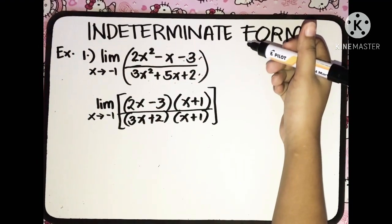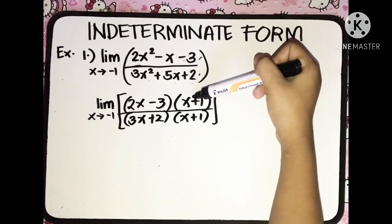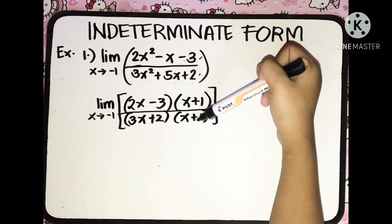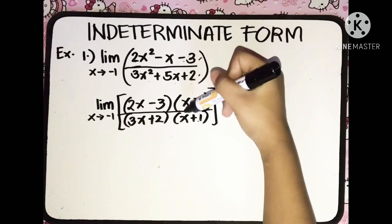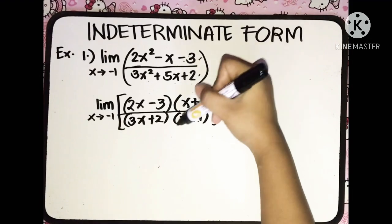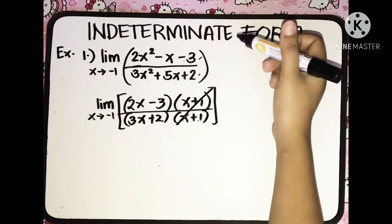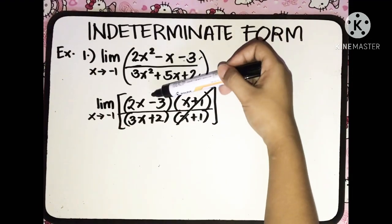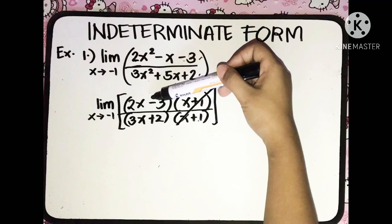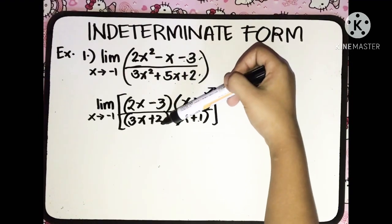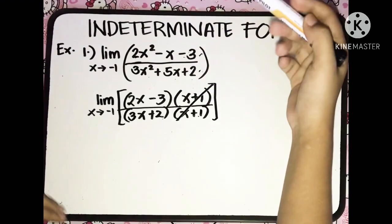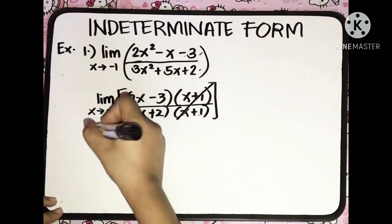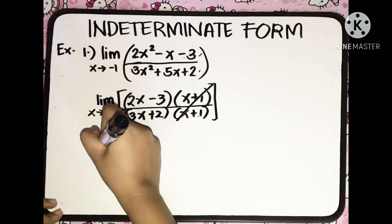Now we can see we have (x plus 1) over (x plus 1), which is equivalent to 1, so we can cancel that out. The function we'll take the limit of will be (2x minus 3) over (3x plus 2), so that's the limit we need to find now.